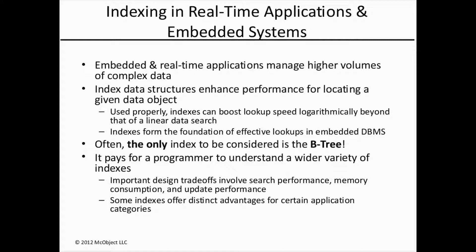Often they're the only index offered, and there's no denying B-tree's efficiency for basic database search operations like exact match, prefix, and range searches. But these plain vanilla indexes are often a poor fit for certain data and access patterns, such as IP routing, geospatial searching, and in-memory database systems.